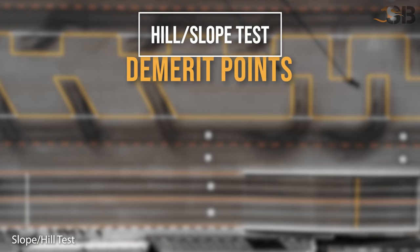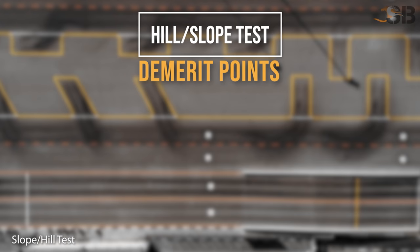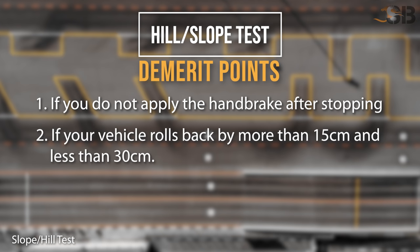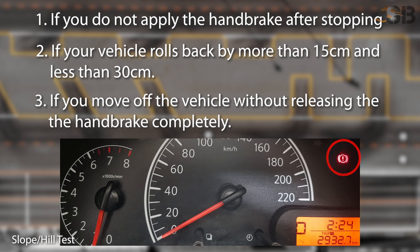Demerit Points: two demerit points are recorded for each of the following minor faults. Number 1: if you do not apply the handbrake after stopping. Number 2: if your vehicle rolls back by more than 15 cm but less than 30 cm. Number 3: if you move off the vehicle without releasing the handbrake completely.